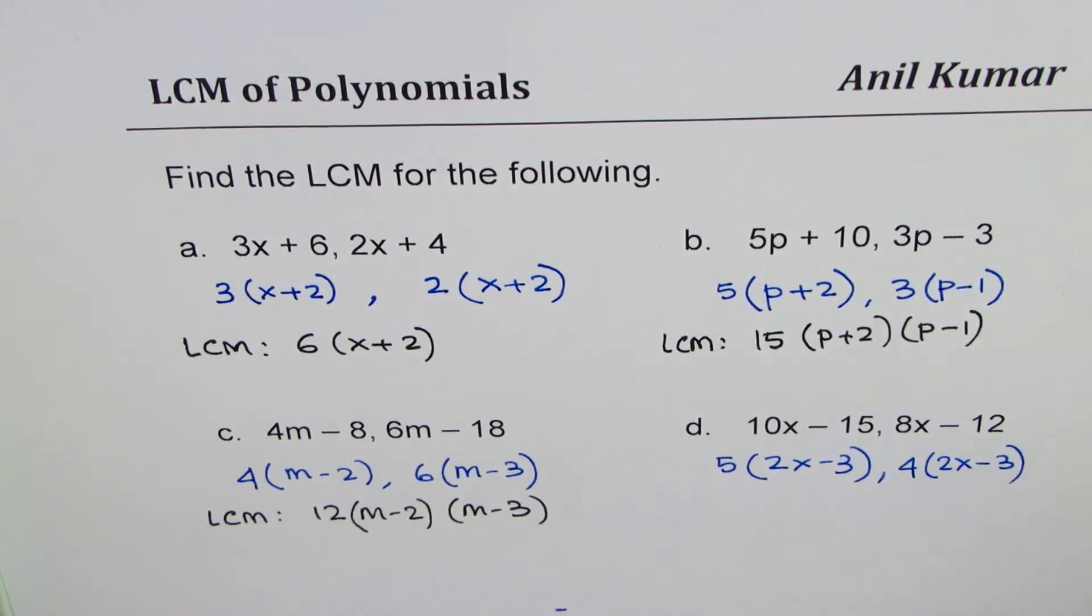So now 2x minus 3 is a common factor between both of them. As far as the numbers are concerned, we can say that the LCM is 5 times 4, 20. And the factors will be 2x minus 3. So I hope you understand the concept.